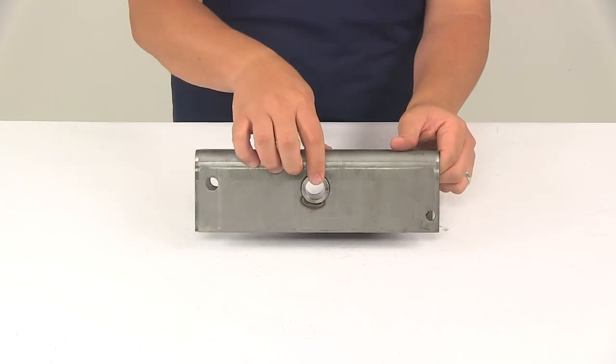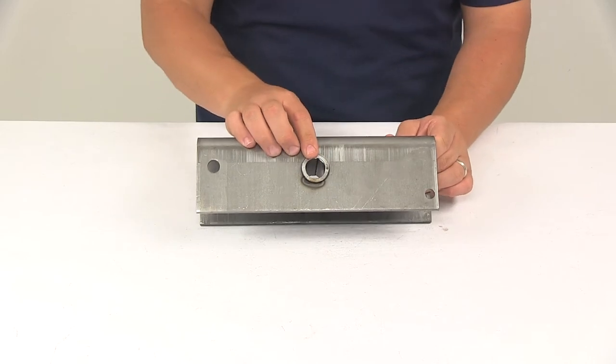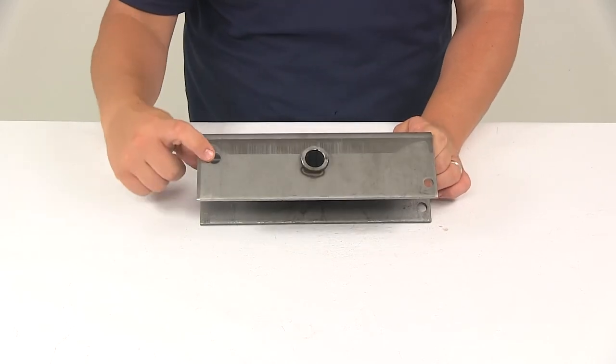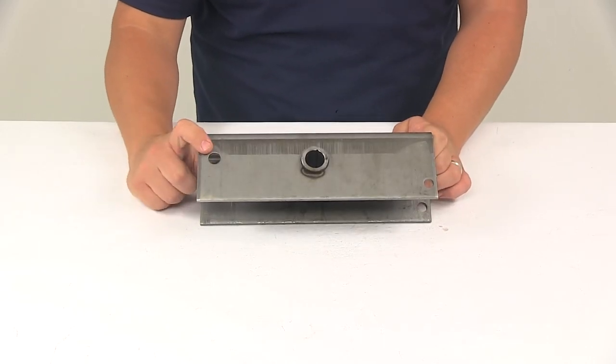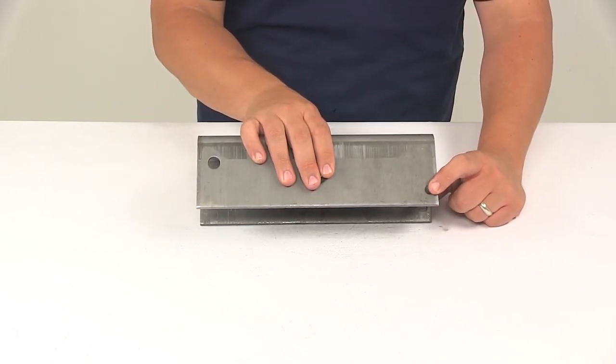The center bolt hole diameter is seven eighths of an inch. The side bolt hole diameter for mounting the spring, so that would be this right here, it's nine sixteenths of an inch in diameter. The side bolt hole diameter for the keeper bolt, this side right here is three eighths of an inch.